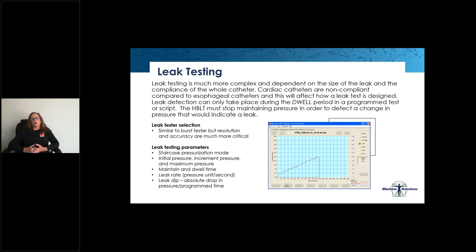Leak testing is more complex and is dependent on the size of the leak and the compliance of the whole catheter. For instance, a cardiac catheter is non-compliant compared to an esophageal catheter, and this is going to affect how our leak test is designed. Leak detection can only take place during the dwell period in a program tester script. The HBLT must stop maintaining pressure in order to detect a change in pressure that would indicate a leak. When we're selecting our leak tester, we want to consider similar things to our selection of a burst tester, but the resolution and accuracy are much more critical to leak testing.